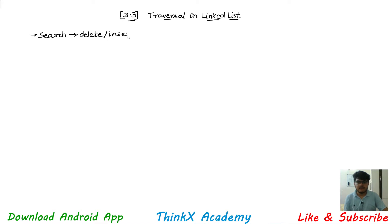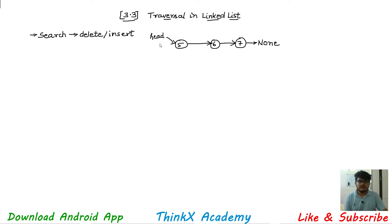We will need traversal. Let's suppose I have a LinkedList here which is 5, 6, 7 — three nodes. We know that the last node is always pointing to the none value or the null reference. These nodes are pointing to each other, and as usual, the head pointer is pointing to the first node of our LinkedList.